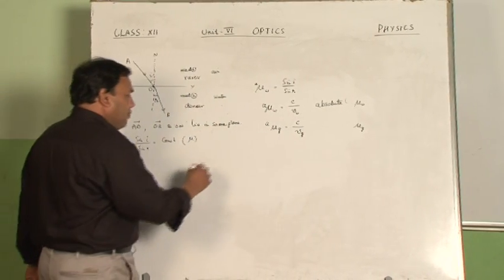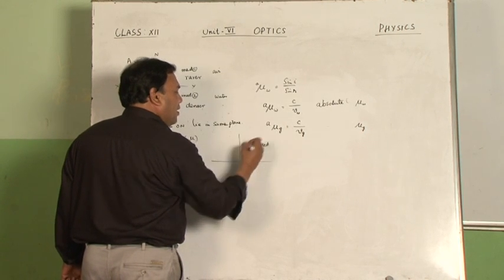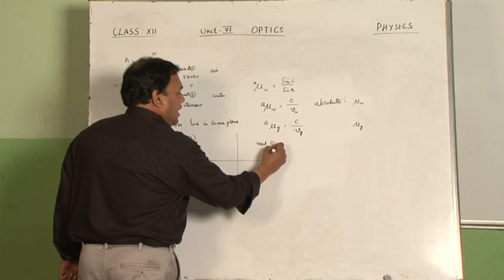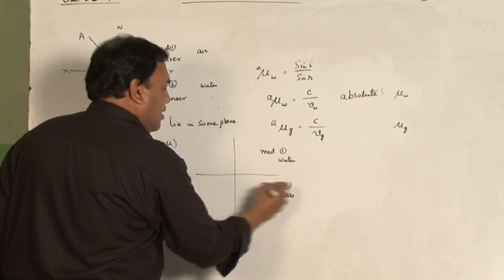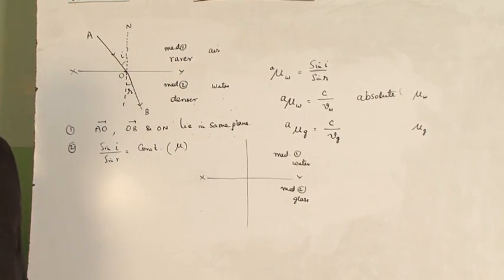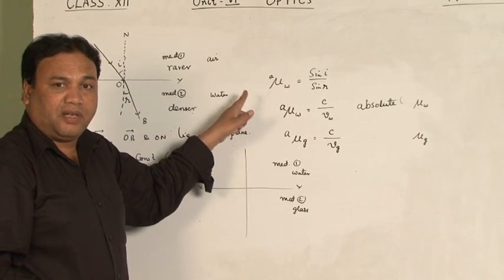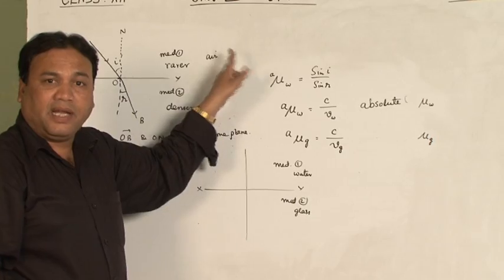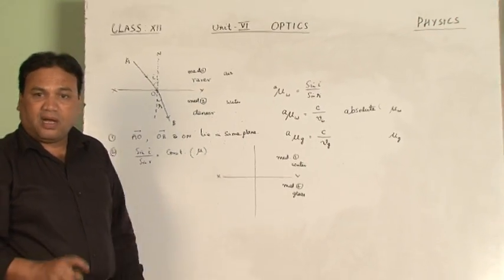Suppose here I have medium 1 and medium 2 — let us say that medium 1 is water and medium 2 is glass. So in this case, how do we define the refractive index of glass with respect to water? In the earlier examples, we defined the refractive index of one medium with respect to air. So now, if the two media are different and apart from air, how can it be done?